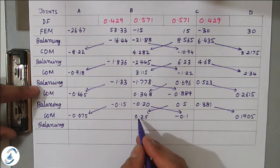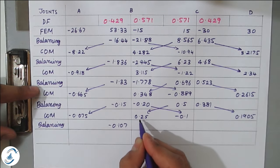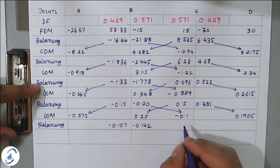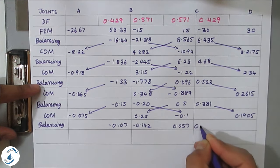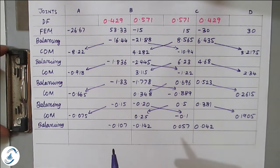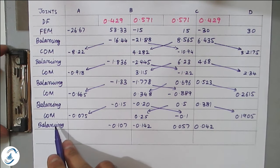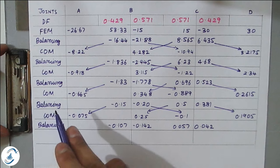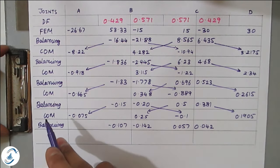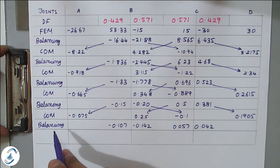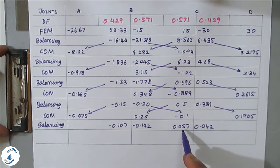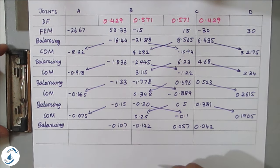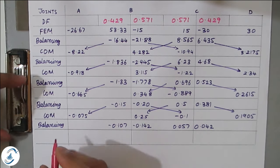The process stops when values reach negligible decimals. Stop the problem always at a balancing row, not a carry-over row — unless there is nothing left to balance. Continue: carry-over gives approximately −0.075, +0.25, −0.10, +0.19. Final balancing: −0.25 × 0.429 = −0.107; −0.25 × 0.571 = −0.142; +0.10 × 0.571 = +0.057; +0.10 × 0.429 = +0.042. Values are now small enough to stop.